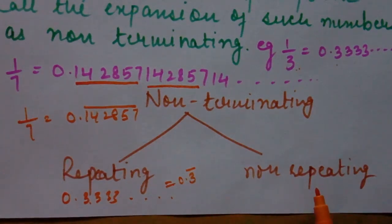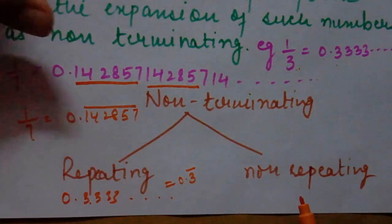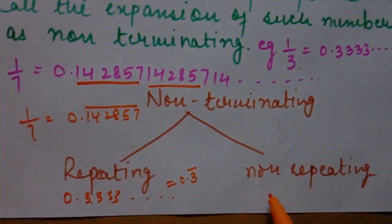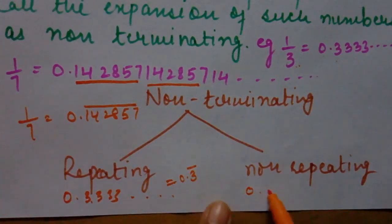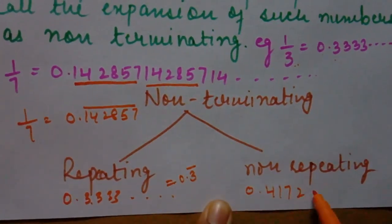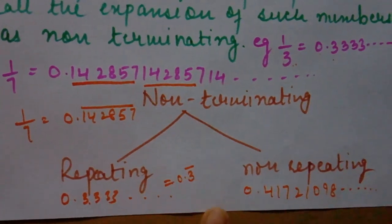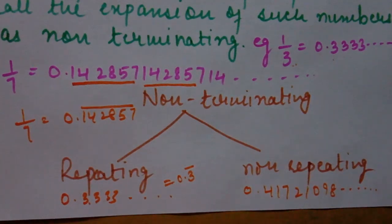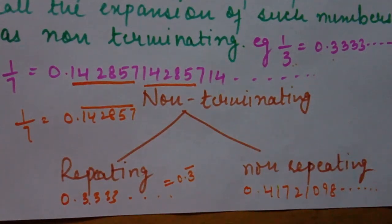Non-repeating terms are those which are non-terminating but non-repeating. These numbers look like 0.417210987... — they do not attain any pattern; different digits appear at different places continuously. So decimal expansion has two types: terminating and non-terminating, and non-terminating has two sub-parts: repeating and non-repeating.